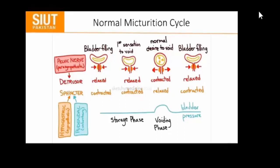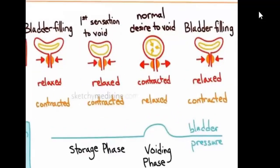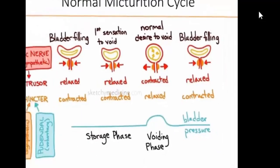When we feel a normal desire to void, at that time the urinary sphincter is contracted and the bladder is relaxed. After this the voiding phase starts. We can see that in the storage phase and the voiding phase, the voiding phase urinary pressure is normally rising.